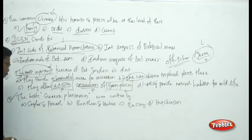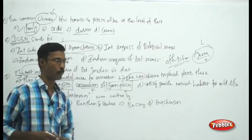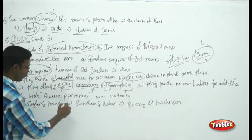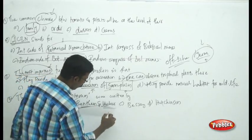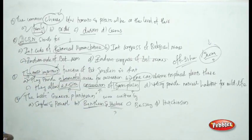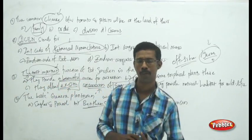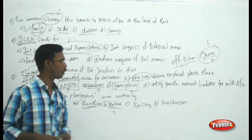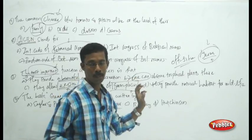The final question from this chapter asks: the book Genera Plantarum was written by whom? This is a direct question. The correct answer is Bentham and Hooker, who wrote Genera Plantarum, a book covering taxonomy and classification of thousands of species.